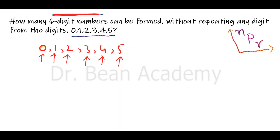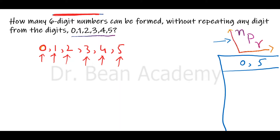Let's take a simpler example to understand what we have to be careful about. Suppose I give you two numbers, zero and five, and ask how many two-digit numbers can you make from these two digits without repeating. You might think there are two permutations: zero-five and five-zero. But no — if you are familiar with our numbering system, zero-five is not a two-digit number; it is a single-digit number.